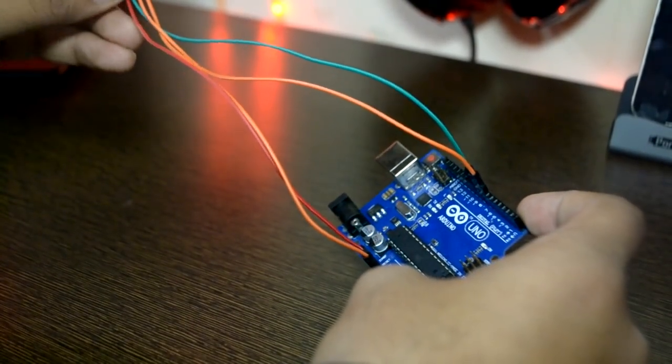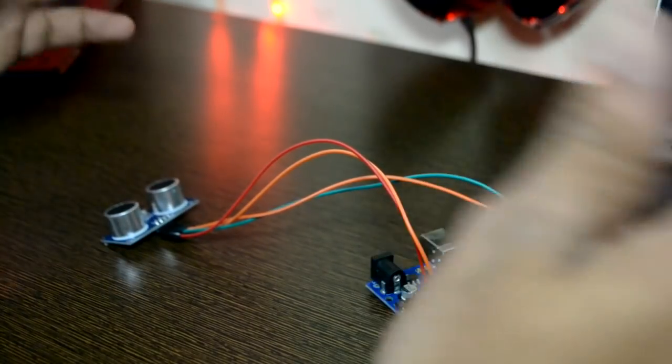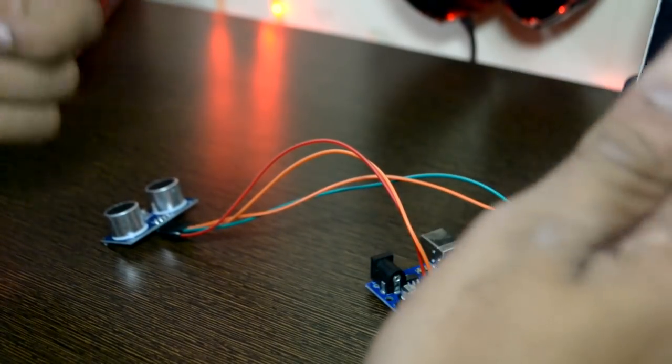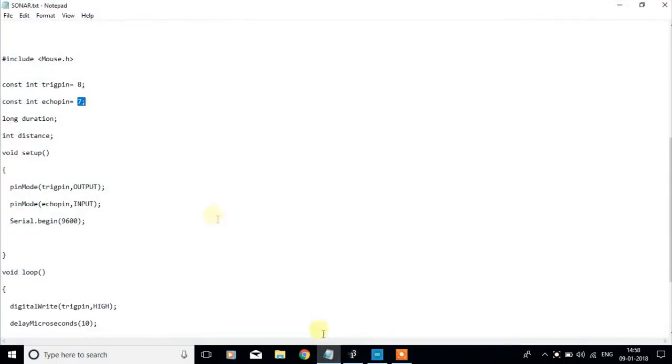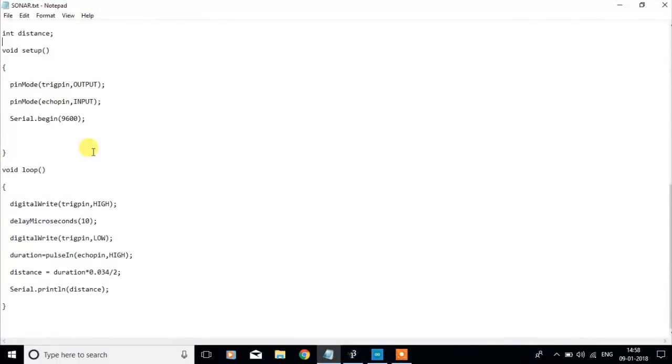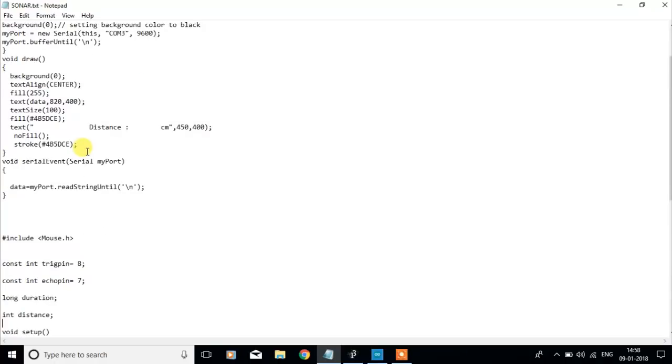And we have the whole circuit diagram in the description. Make sure you check that. So now let's quickly go on to our computers. And now let's quickly upload the program. Alright. So now I have connected my Arduino board to my laptop. So now we have two codes. First we have to use the processing unit. I'll tell you what the processing unit is in a minute.